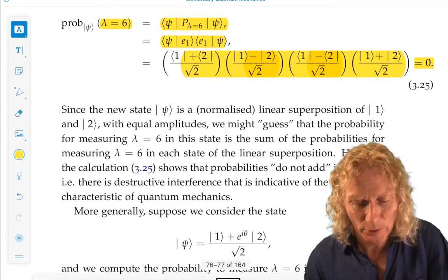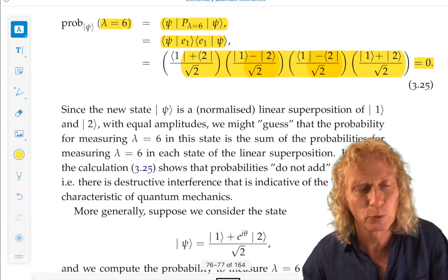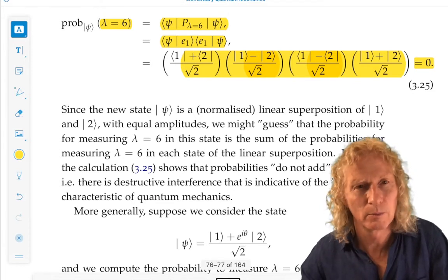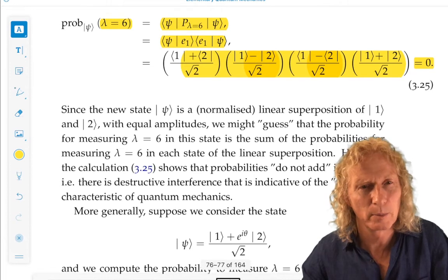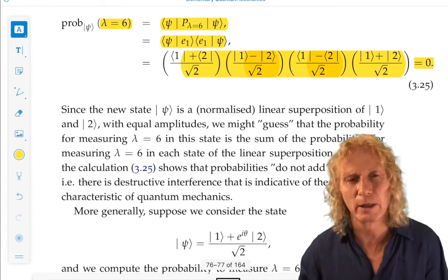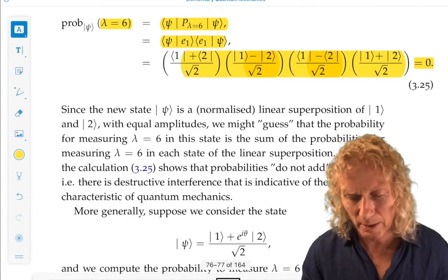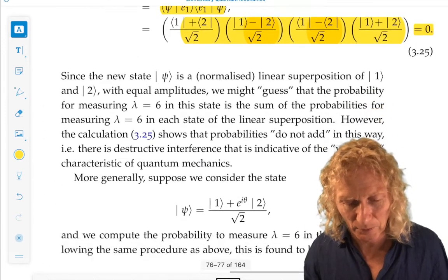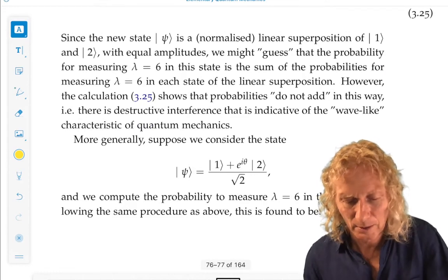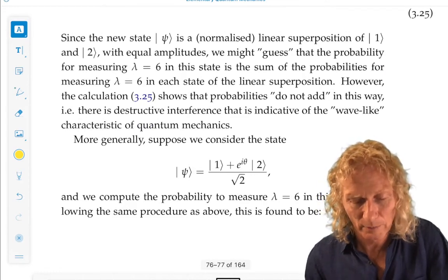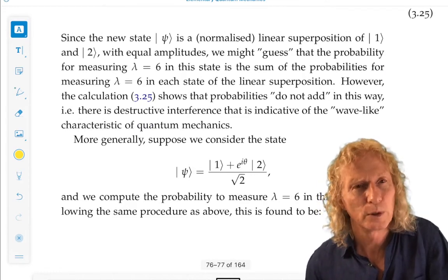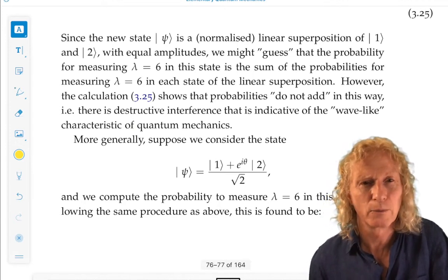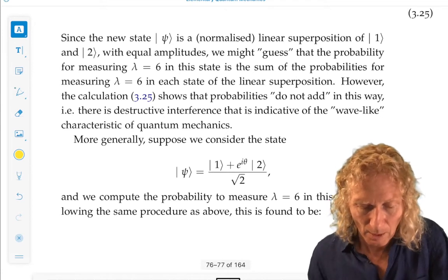So, curiously, if you measure it in one state, in just one of the states, you get probability half. In the other state, you get probability half. You add them together and you get zero. This illustrates the idea that probabilities don't add and you have this destructive interference between the states in some sense, which is very much indicative of wave-like phenomena.